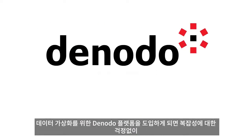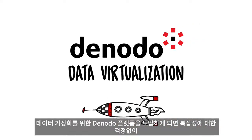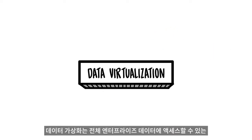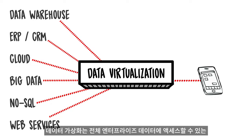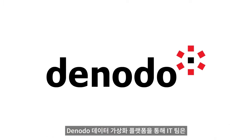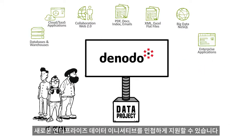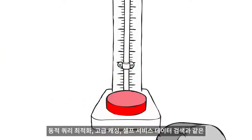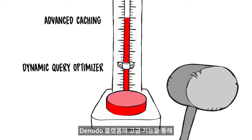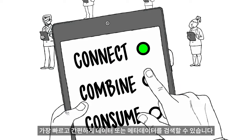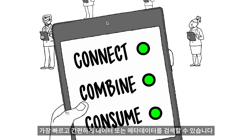Introducing Denodo Platform for Data Virtualisation – the fastest way to access all your enterprise data without worrying about the underlying complexity. Data Virtualisation offers a single point of access to your entire enterprise data without the need to move it to a centralised repository. Denodo Data Virtualisation Platform provides IT with the agility to support their new enterprise data initiatives. With advanced features like Dynamic Query Optimiser, Advanced Caching and Self-Service Data Discovery, you and your business stakeholders can now search for any data or metadata in a self-service manner in the fastest and easiest possible way.